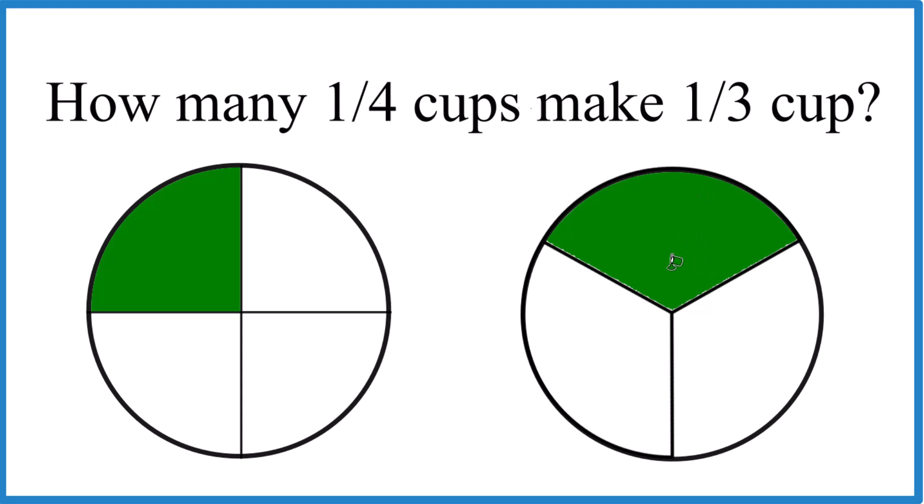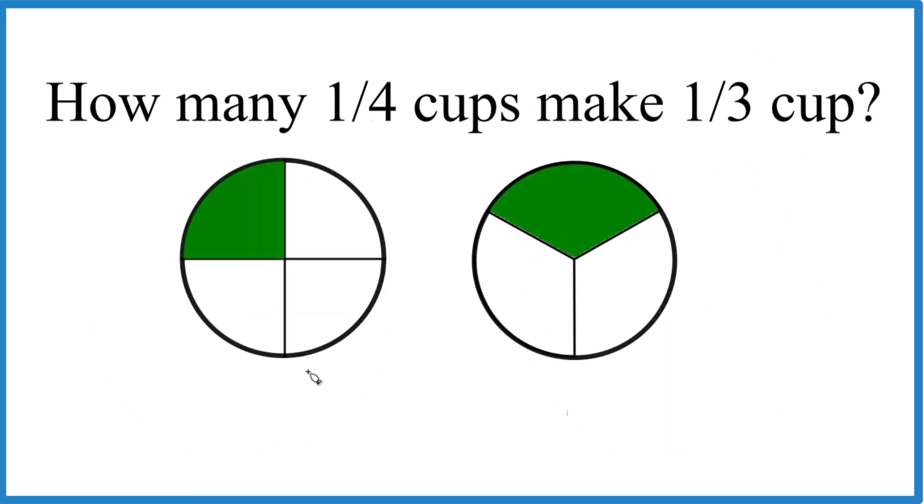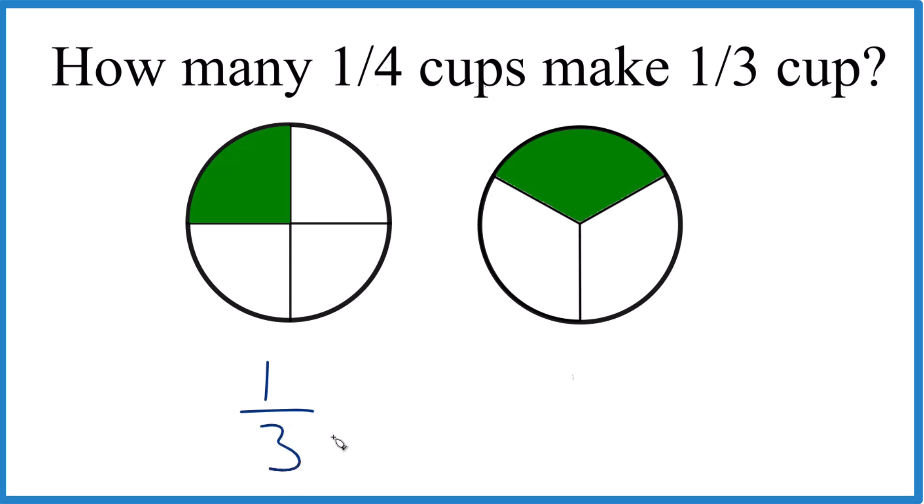One, but one and a little bit more. So let's do the math way to solve this problem. Basically we're taking one-third cup, and we want to know how many times one-fourth goes into it. So we're going to divide one-third by one-fourth.